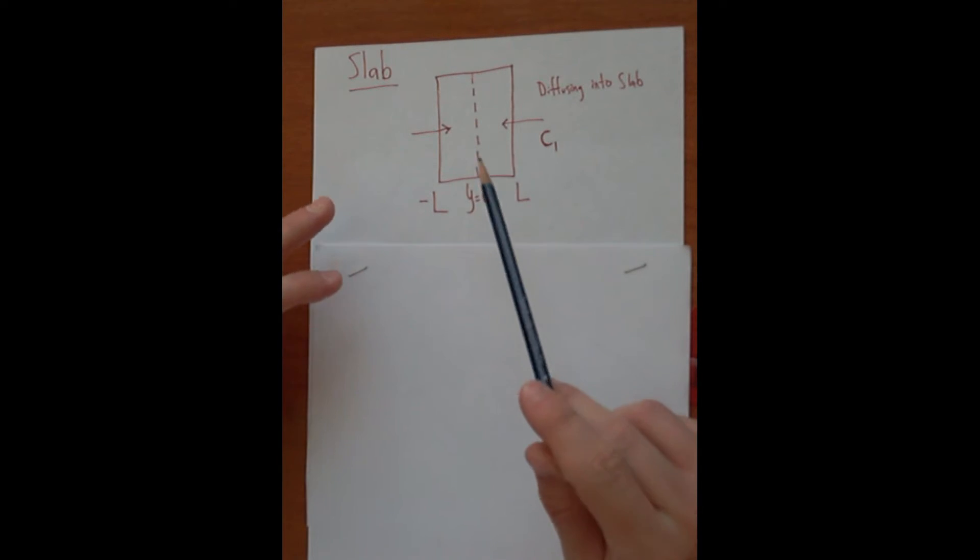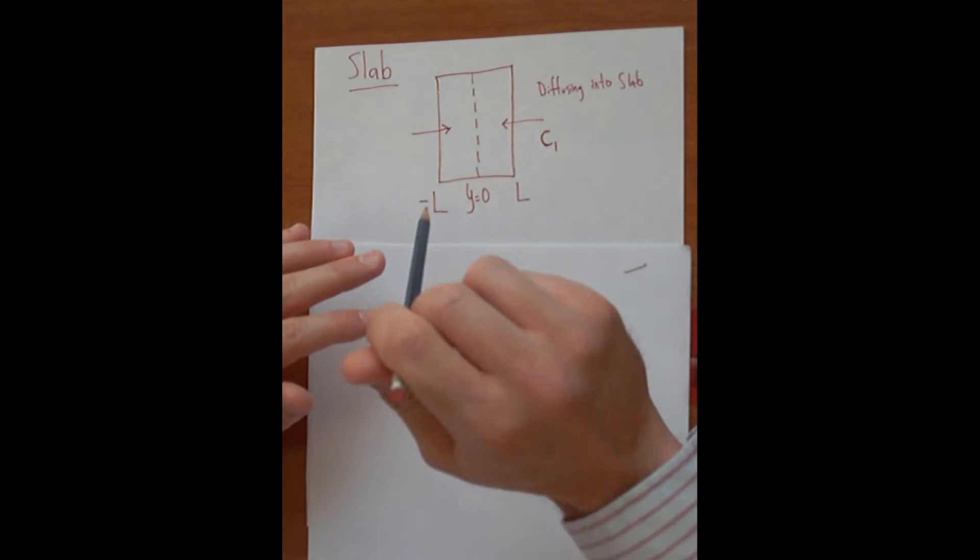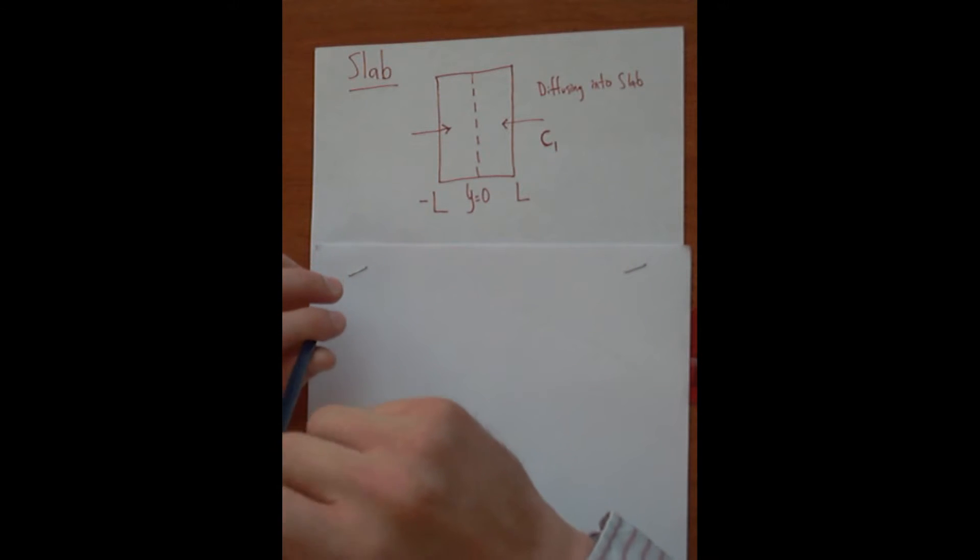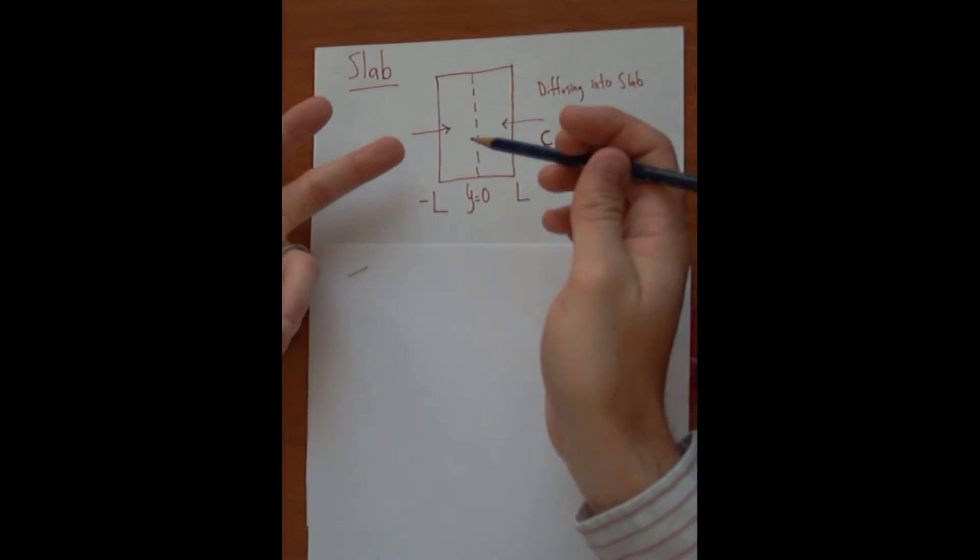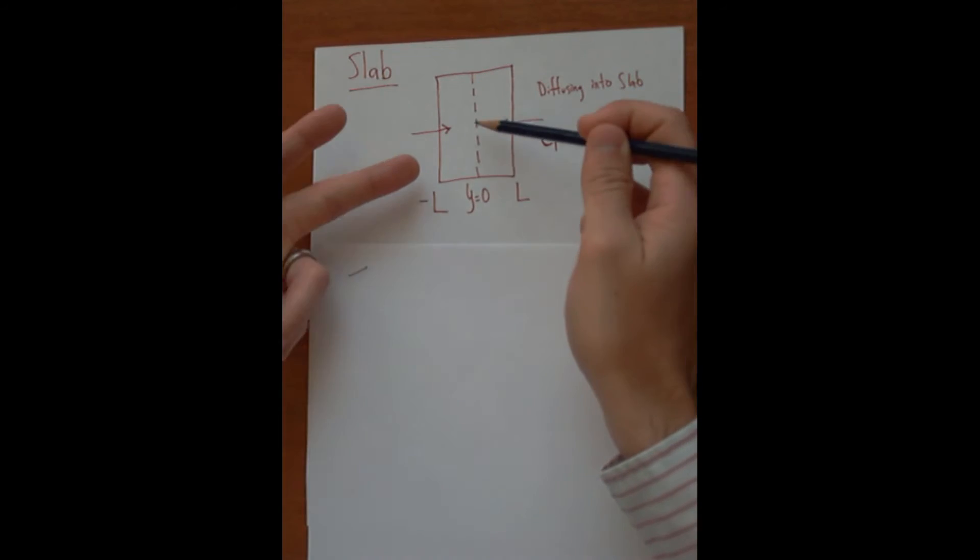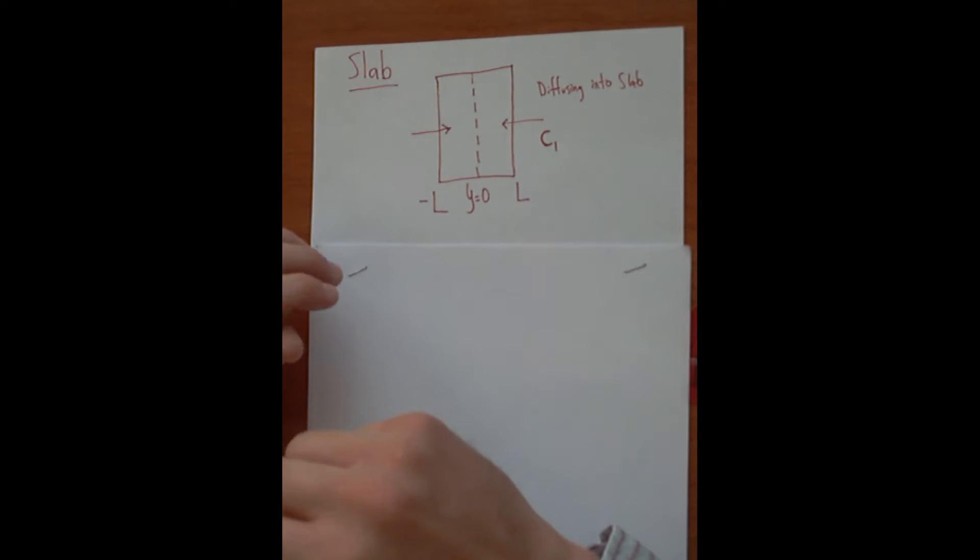So the slab is much taller than it is wide so that most of the diffusion into the slab will be 1D diffusion going into both sides of the slab. You won't have to worry about any diffusion coming in from these directions, top and bottom.